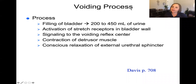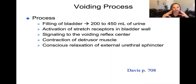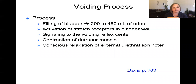In order to understand what is abnormal, we must first understand what is normal. For the voiding process, typically the bladder fills with between 200 to 450 mls of urine, and the stretch activates stretch receptors in the bladder wall that signal the voiding reflex center. When the patient is ready to eliminate, the detrusor muscle contracts to push urine out through the urethra, and conscious relaxation of the external urethral sphincter allows urine to freely flow out of the body.